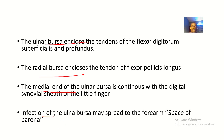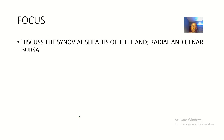Infections of the ulnar bursa may also spread into the forearm — specifically the space of Parona. That covers the synovial sheets of the hand: the radial and ulnar bursa. See you in the next one.